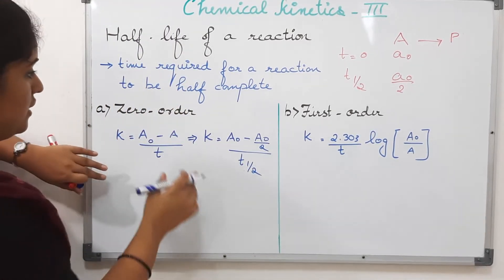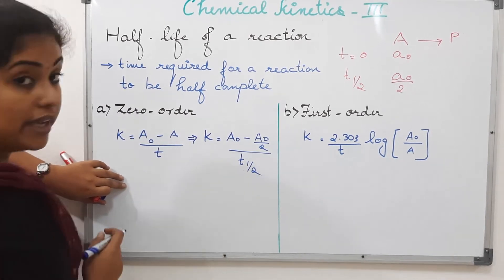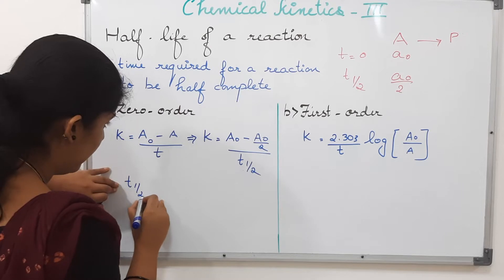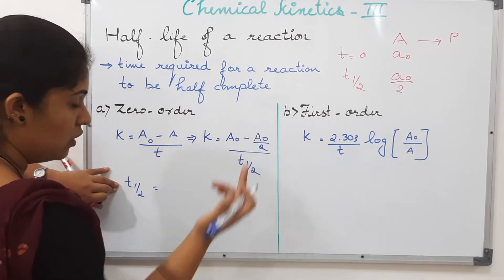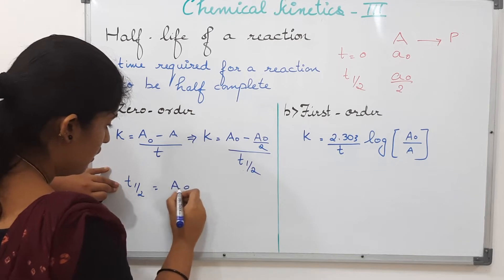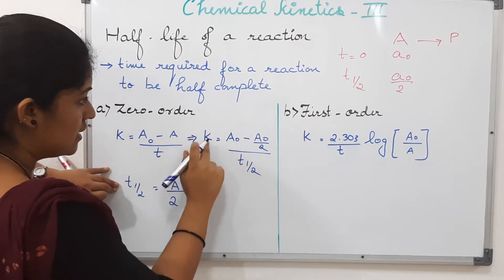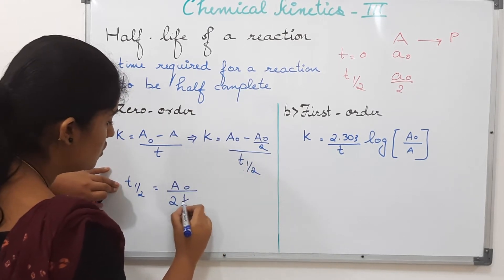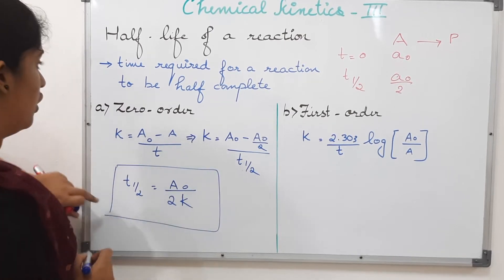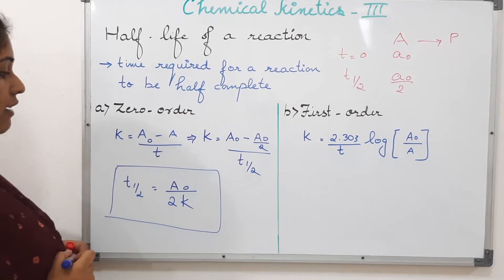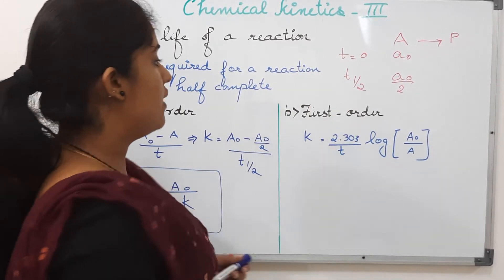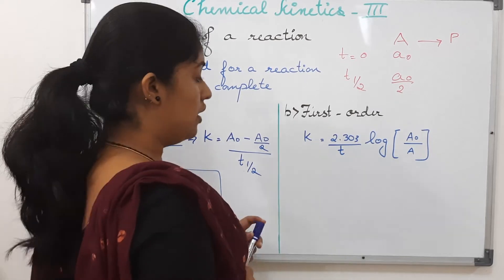Now let us cross multiply and solve to get the final t-half value. We get t-half equal to A-naught minus A-naught by 2, that is A-naught by 2, divided by k. So this is the equation of half-life for a zero-order reaction: t-half is A-naught by 2k. Now moving on to the first-order reaction.